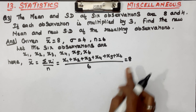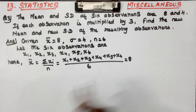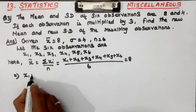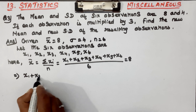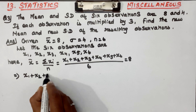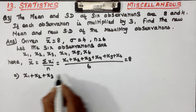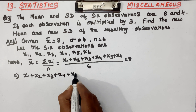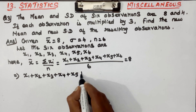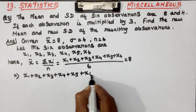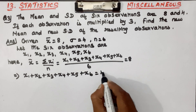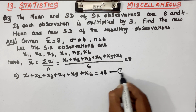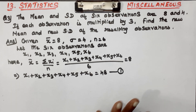So x1 plus x2 plus x3 plus x4 plus x5 plus x6 equals 8 times 6, which equals 48. This is Equation number 1.